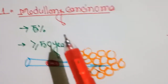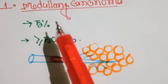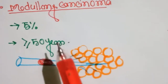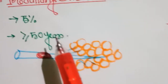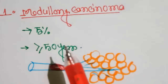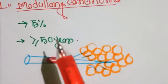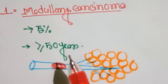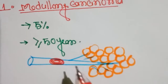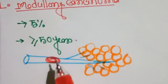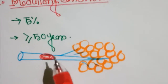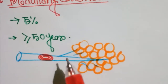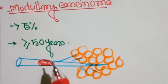Medullary carcinoma accounts for about five percent of breast cancer. It tends to be diagnosed more often in women younger than 50 years old. The tumors show a capsule in the duct and can become large.